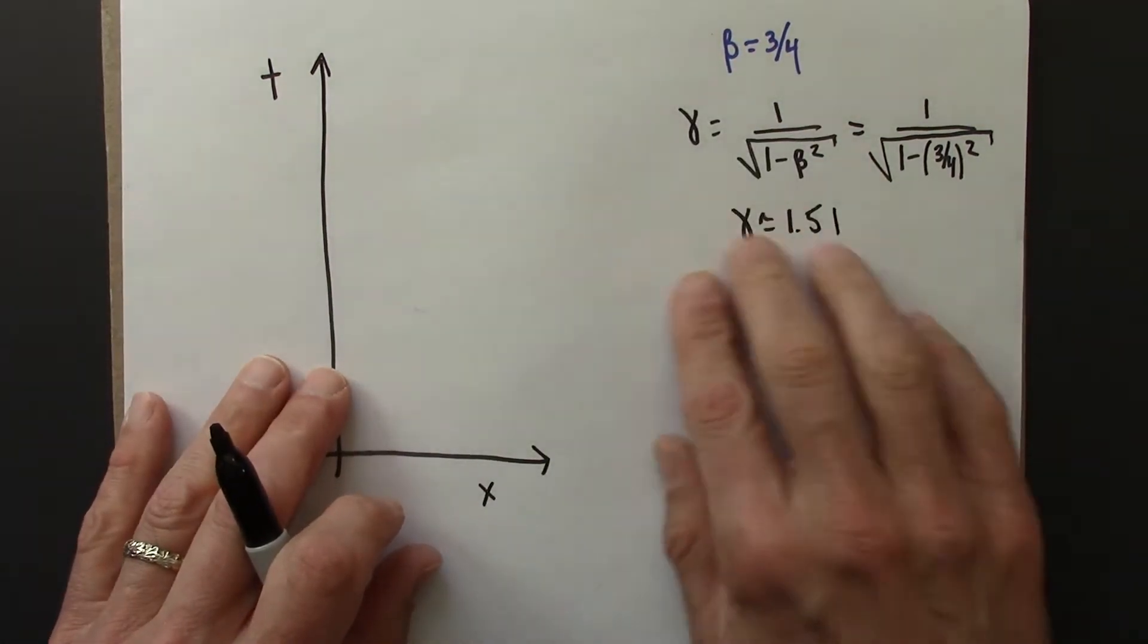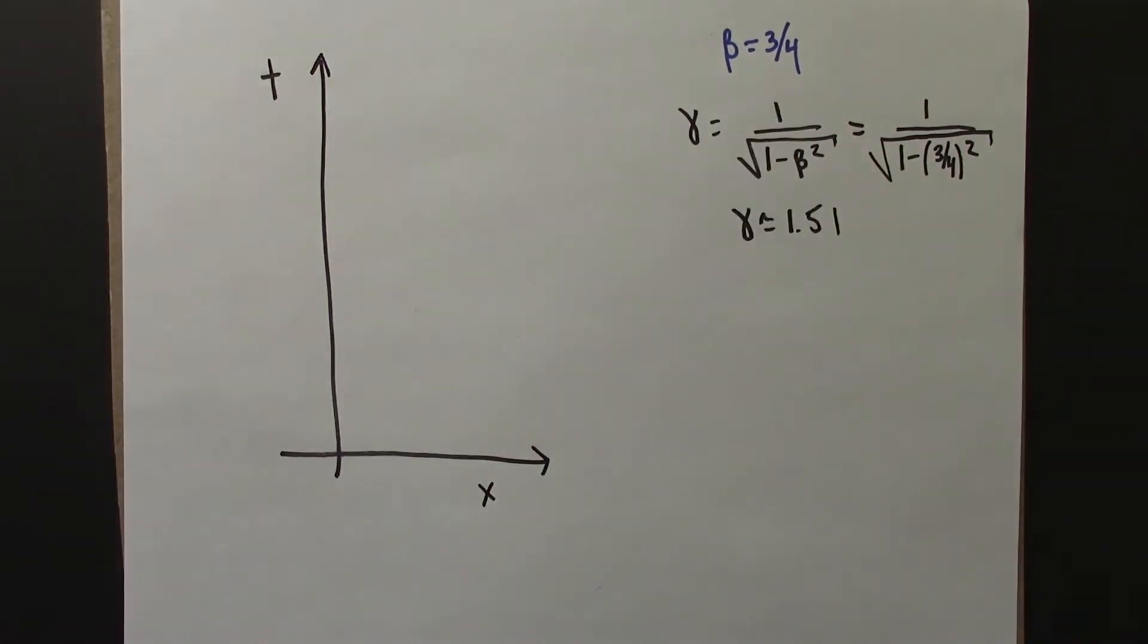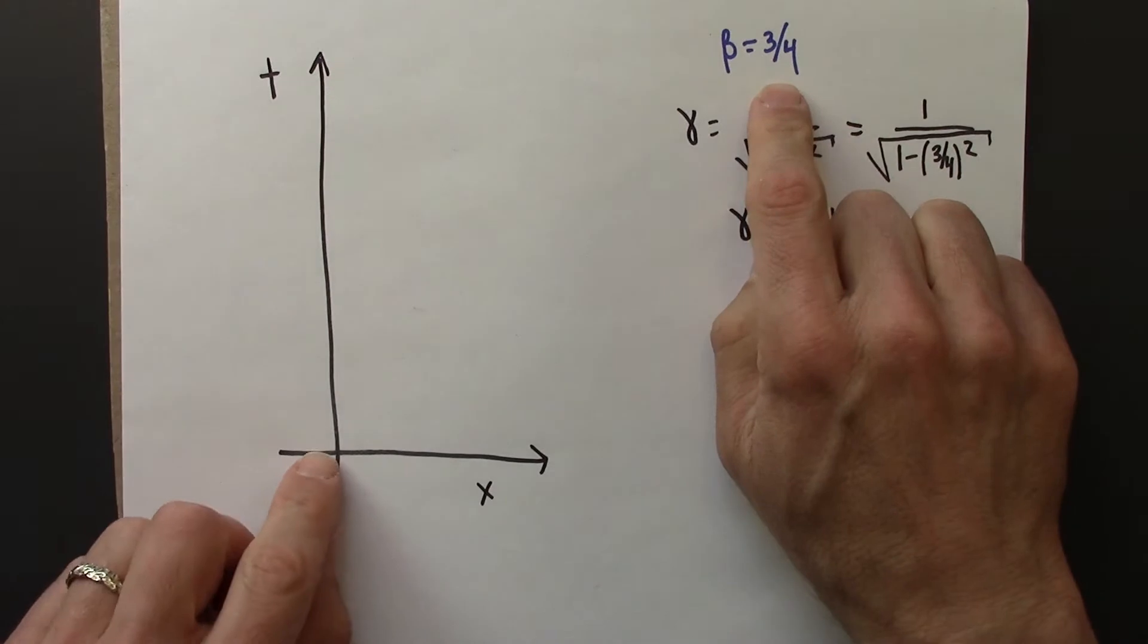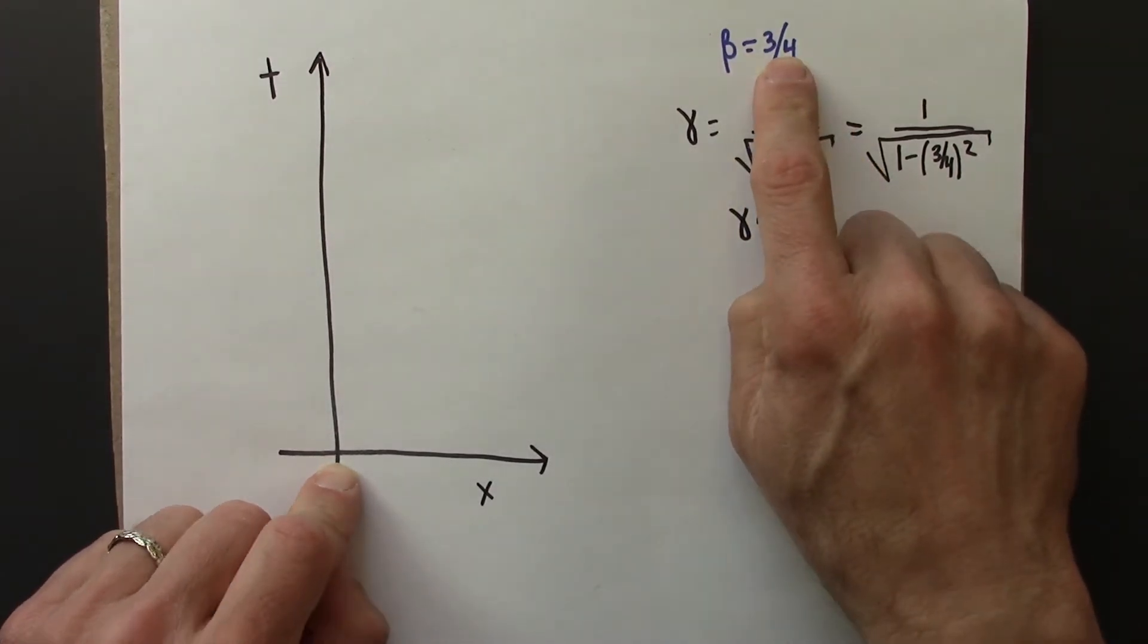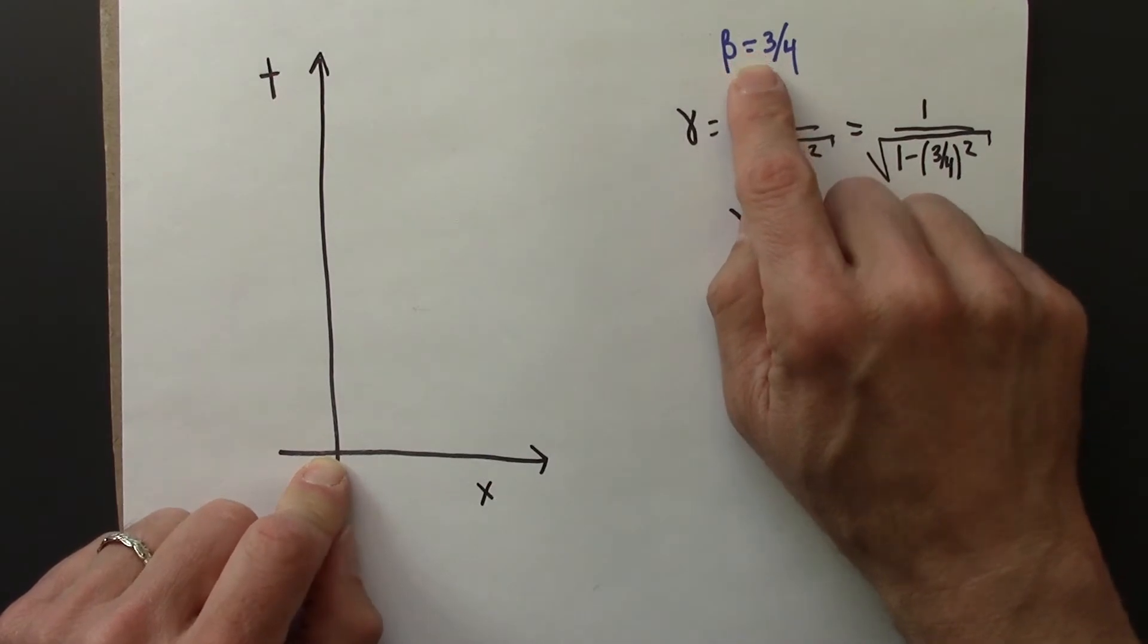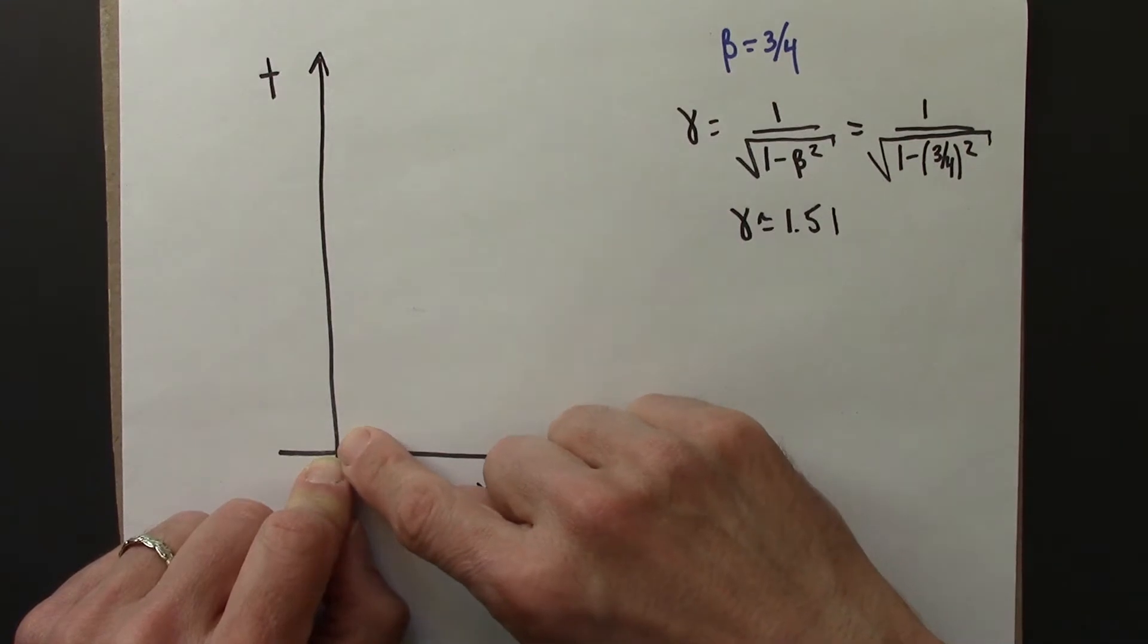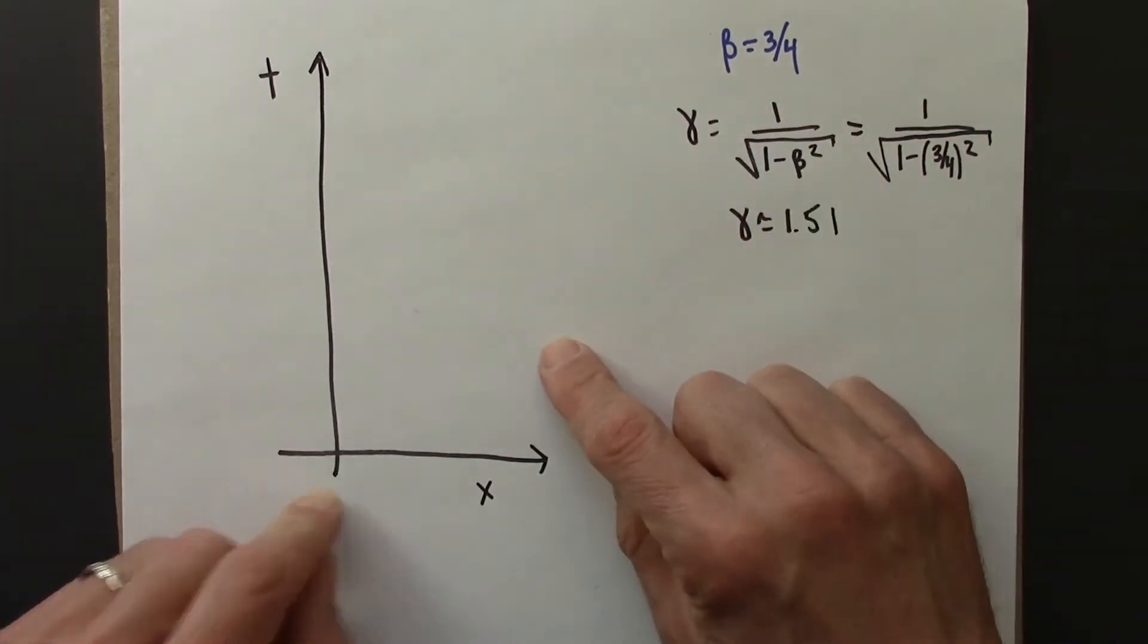Okay, so we'll use that in a moment. Beta is 3 quarters. So that means that's the speed of Beowulf, that's the speed of Beowulf's clock. So the t prime axis is the world line of Beowulf's origin clock. So that will be a straight line with a slope of 4 over 3.